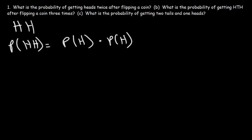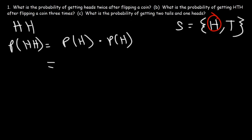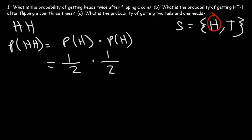So what is the probability of getting heads just by flipping one coin? If we write out the sample space, there are only two options — either we get heads or tails. So the probability of getting heads is one out of two. For the second event, the probability is the same: also one out of two. One times one is one, two times two is four. So the probability of getting two heads is one out of four.